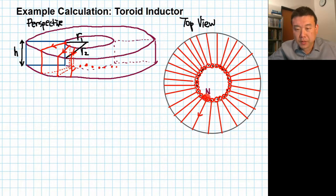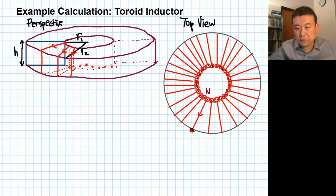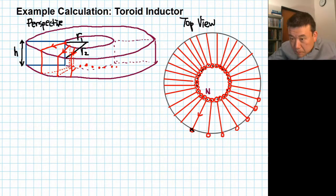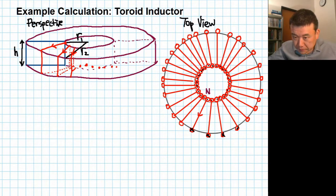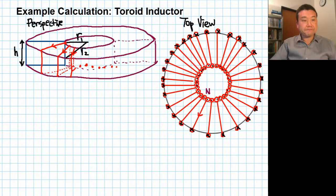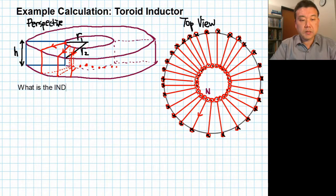The wire comes out of the board, radially goes out, and on the outside radius it goes into the board again. I'm not drawing the return wire on the other side along the bottom of the toroid. I need to indicate the direction of the wire — either coming out of or going into the board. So this is the question we are trying to answer in this example calculation: what is the inductance?